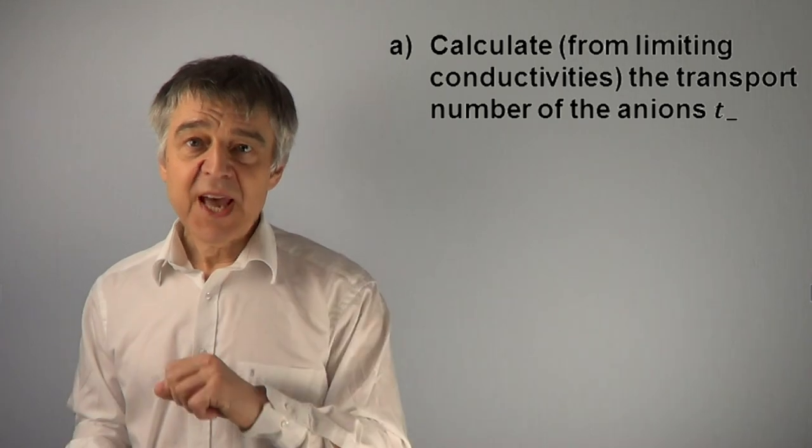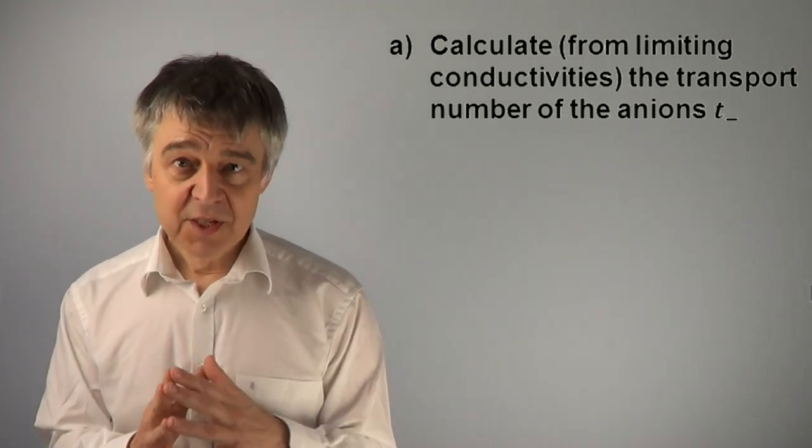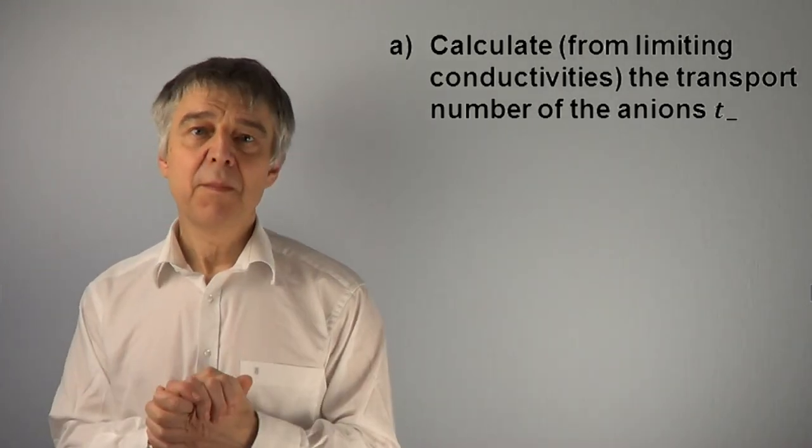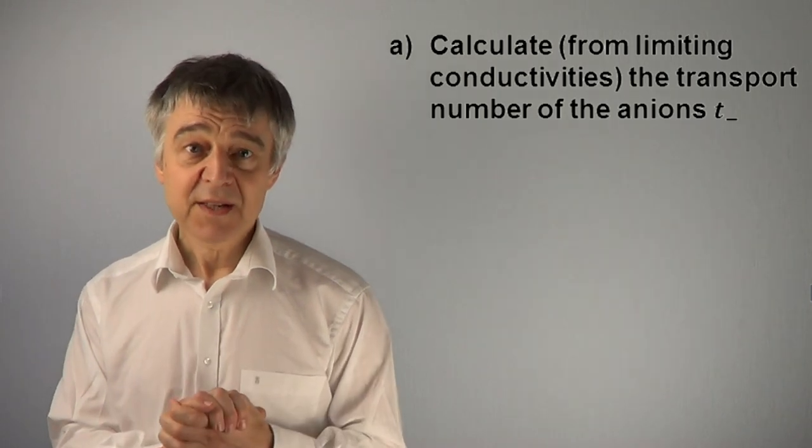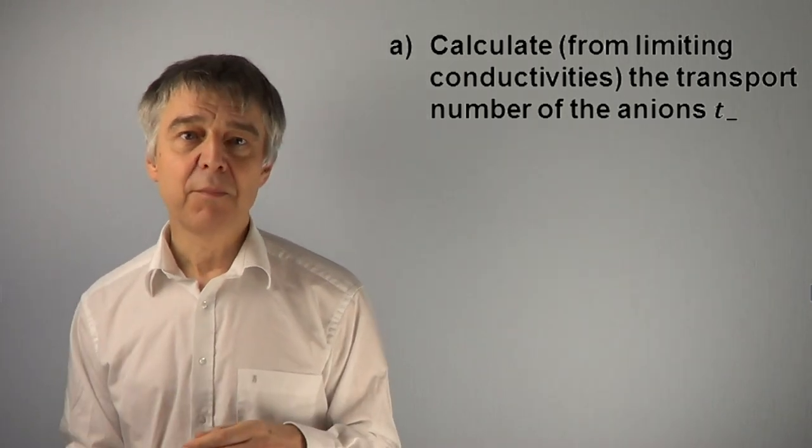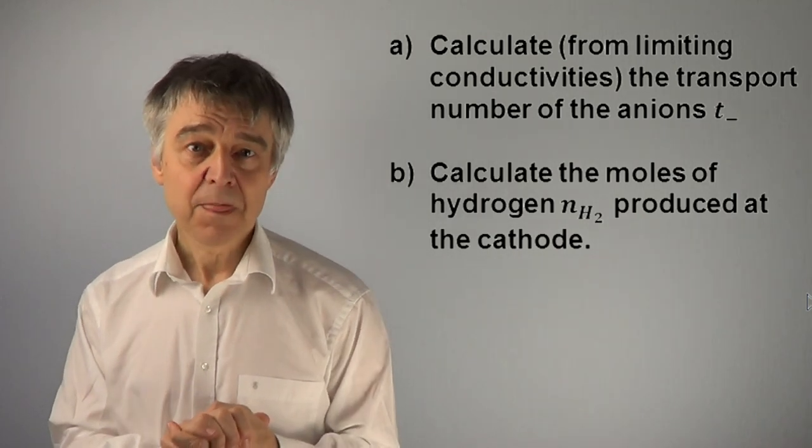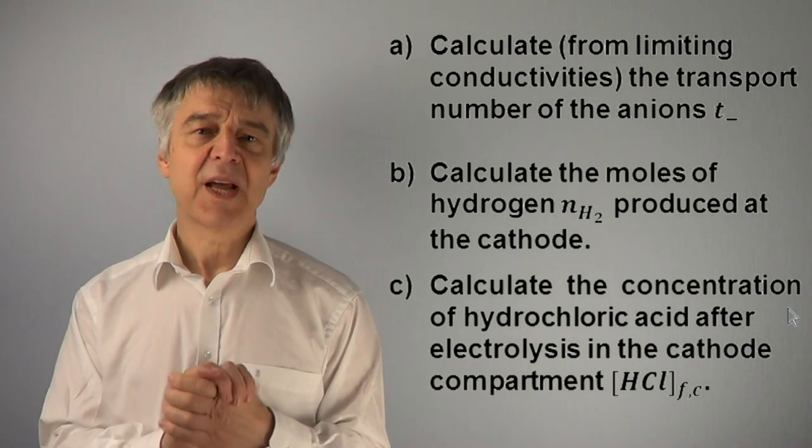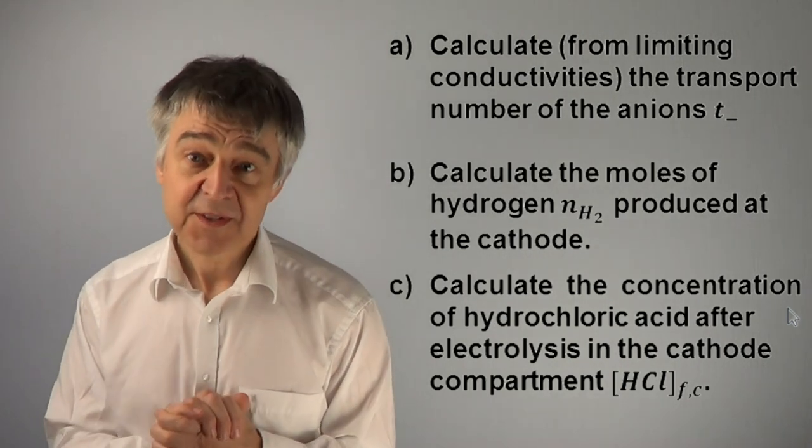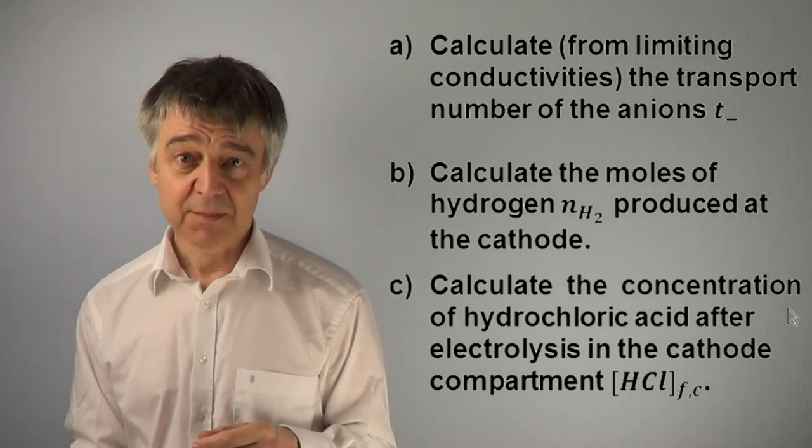First, calculate from the limiting conductivities the transfer number of the anions, and then determine the number of moles of hydrogen produced at the cathode and the concentration of hydrochloric acid after electrolysis in the cathode compartment.